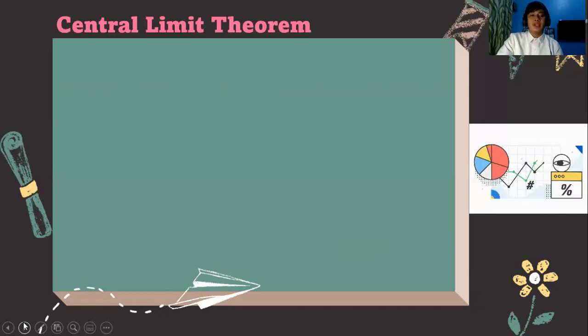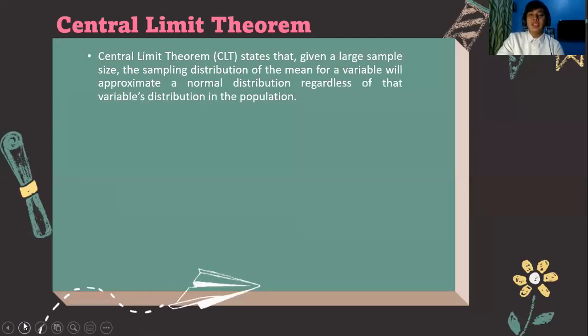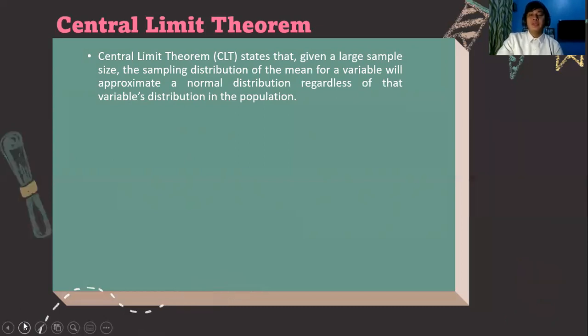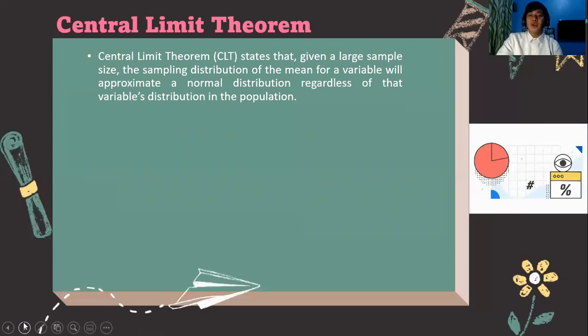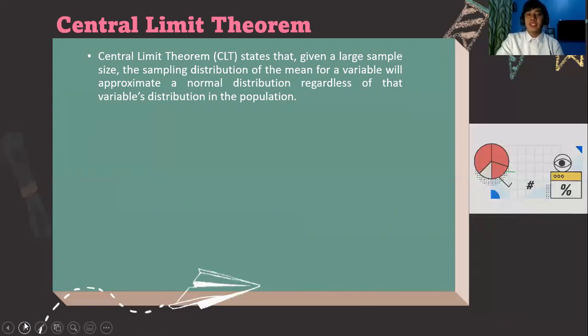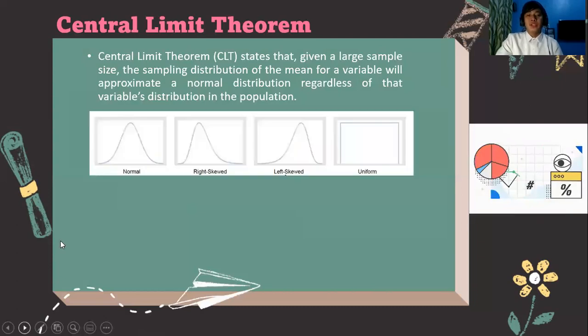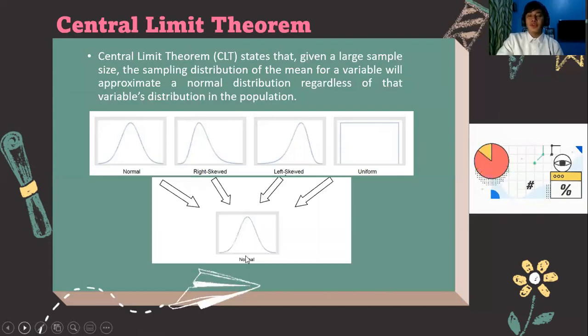What is a central limit theorem? The central limit theorem states that given a large sample size, the sampling distribution of the mean for the variable will approximate a normal distribution. Because as a researcher, that is your target to make your respondents or participants of the study to be normal. So how could we achieve that? Based from the central limit theorem, we have to make our sample size large enough to guarantee that theorem. So these are the different types of distribution and all of this must be like a normal distribution.